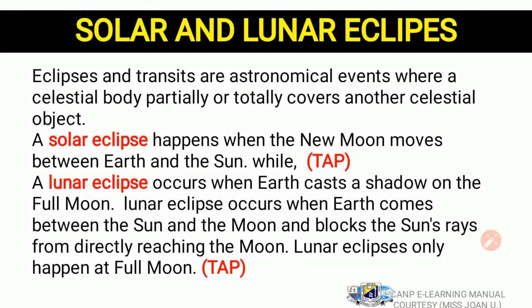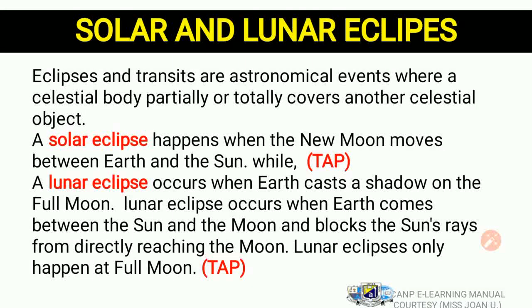This now takes us to solar and lunar eclipses. What is an eclipse? When we talk of an eclipse we are talking about an astronomical event where one celestial body either partially or totally covers another celestial object — talking about the stars, the Moon, the Sun, and the Earth. When one of these bodies comes in between two others, we say an eclipse has occurred.